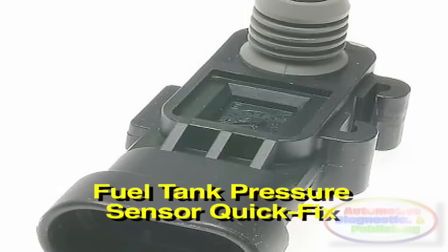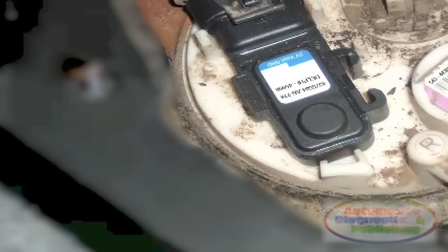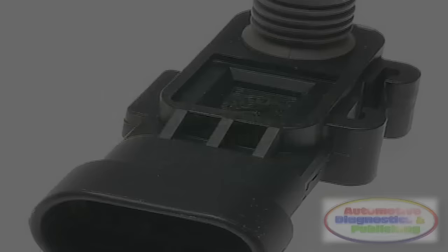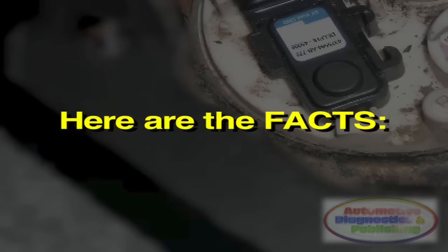Fuel tank pressure sensor quick fix. The three-wire fuel tank pressure sensor is connected to the fuel tank by hose and to the ECM. The ECM uses this value to run the evap monitor. This sensor has no bearing on how the engine runs.